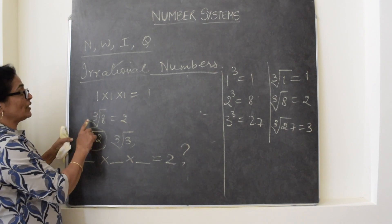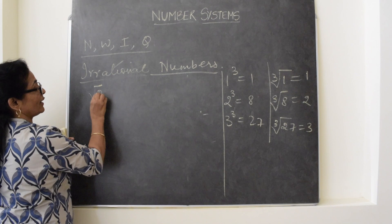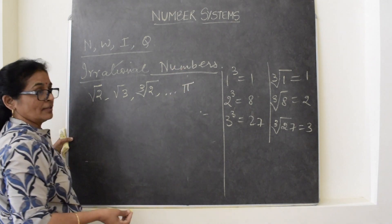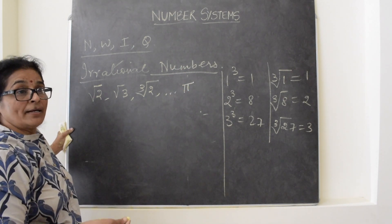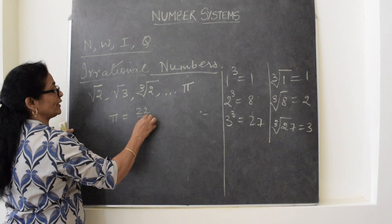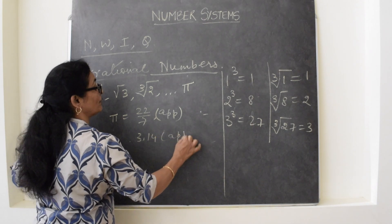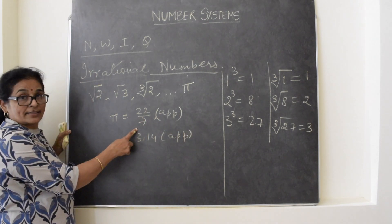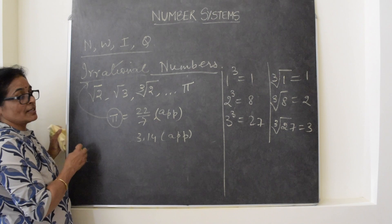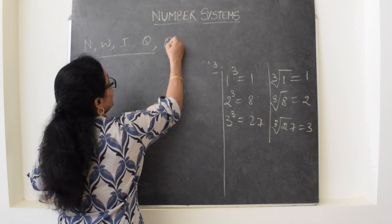So one type of irrational numbers is by using the radical sign — cube root of 2 and so on. One very common number is pi, which is used in geometry. Its approximate value is 22 by 7 or 3.14. Always remember this value is not exact, so pi also comes in the category of irrational numbers.